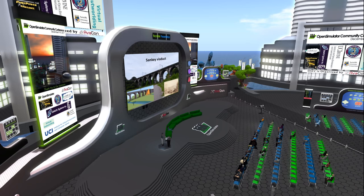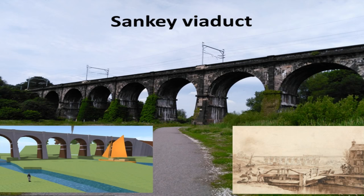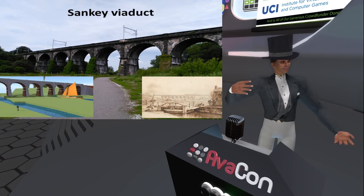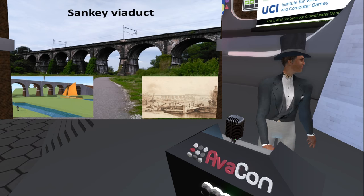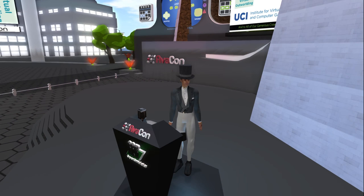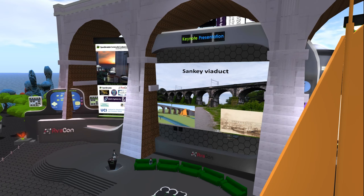I just want to end with one final feature, and this is the Sankey Viaduct. It's now a Grade I listed viaduct, dates all the way back to 1830 but is still used. It was over-engineered basically — it is 60 feet high and was able to take the ships, the Mersey Flats as they were called, the barges carrying goods, under the railway arches as it went over the Sankey River and the canal. And here we can see in all its glory three of the nine arches of the Sankey Viaduct, and indeed one of the barges, roughly to scale.